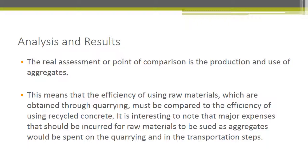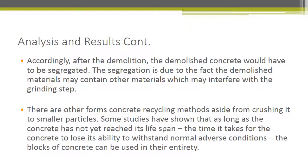The real point of comparison is the result and use of aggregate. This means the efficiency of using raw materials obtained through quarrying must be compared to the efficiency of using recycled concrete. The minor expenses incurred for raw material used as aggregate are mainly in the quarrying and transportation steps. After demolition, the demolished concrete must be segregated, since the demolished material may contain other materials that interfere with the grading step. There is also another recycling method aside from crushing: if the concrete has not yet reached its lifespan, the concrete block can be reused entirely.